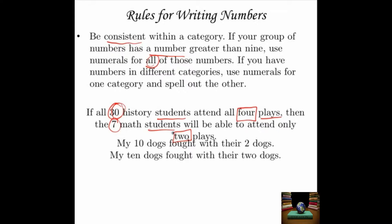Next example: "My 10 dogs fought with their 2 dogs." Both groups of dogs are the same category, so because we have ten, we use the numeral 2 for the other as well. But you can also get away with writing "My ten dogs fought with their two dogs" — this is a gray area. Ten doesn't take up too much extra space to spell out, so you won't slow down the reader much. Particularly if you're writing a non-technical document like a novel, go ahead and spell out the numbers — it flows better. Whichever way you go, be consistent.